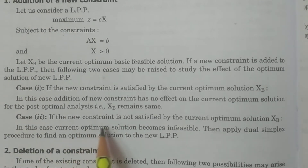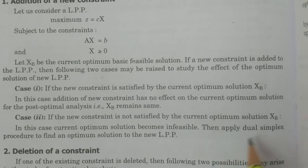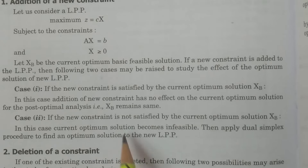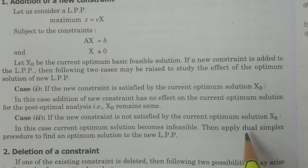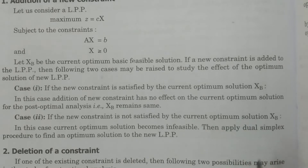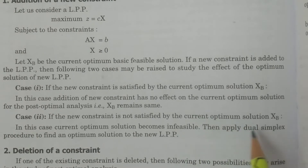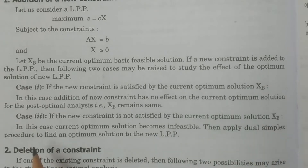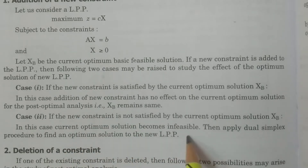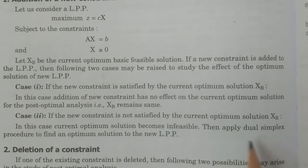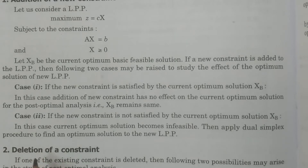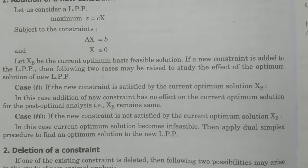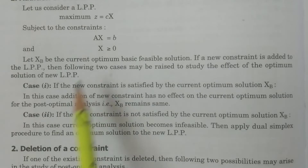In Case 2, if we add a new constraint that the current optimum solution xB does not satisfy, then the current optimum solution becomes infeasible. In this case, we apply the dual simplex procedure. If we find a new optimum solution, we apply the dual simplex procedure. This concludes the discussion for addition of a new constraint.